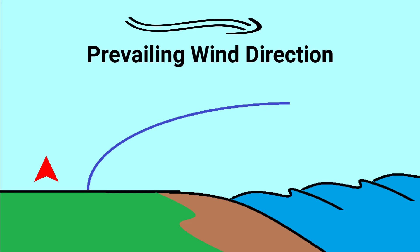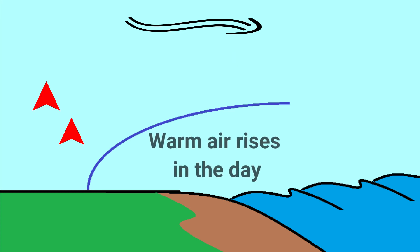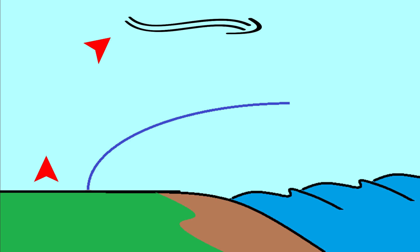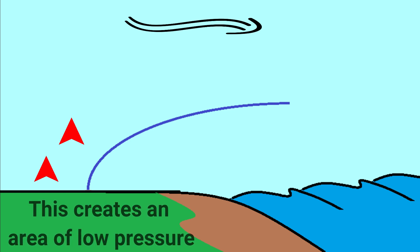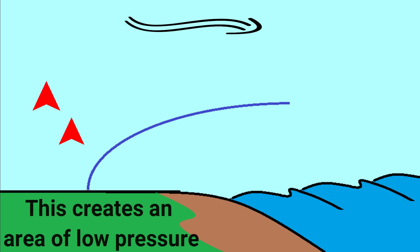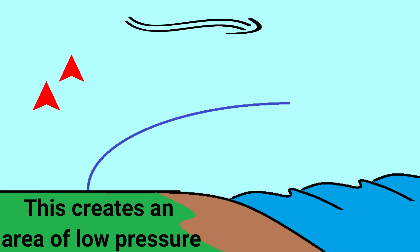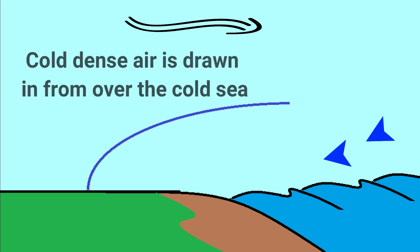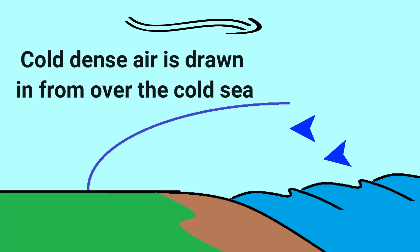Prevailing wind direction has been from onshore towards the coast, and the warm summer's days and clear skies have heated the land. The warm air is rising and creating an area of low pressure. As a result of this low pressure area, cool dense air from over the sea is being sucked in to the land. Balloons are launching into this cooler air.